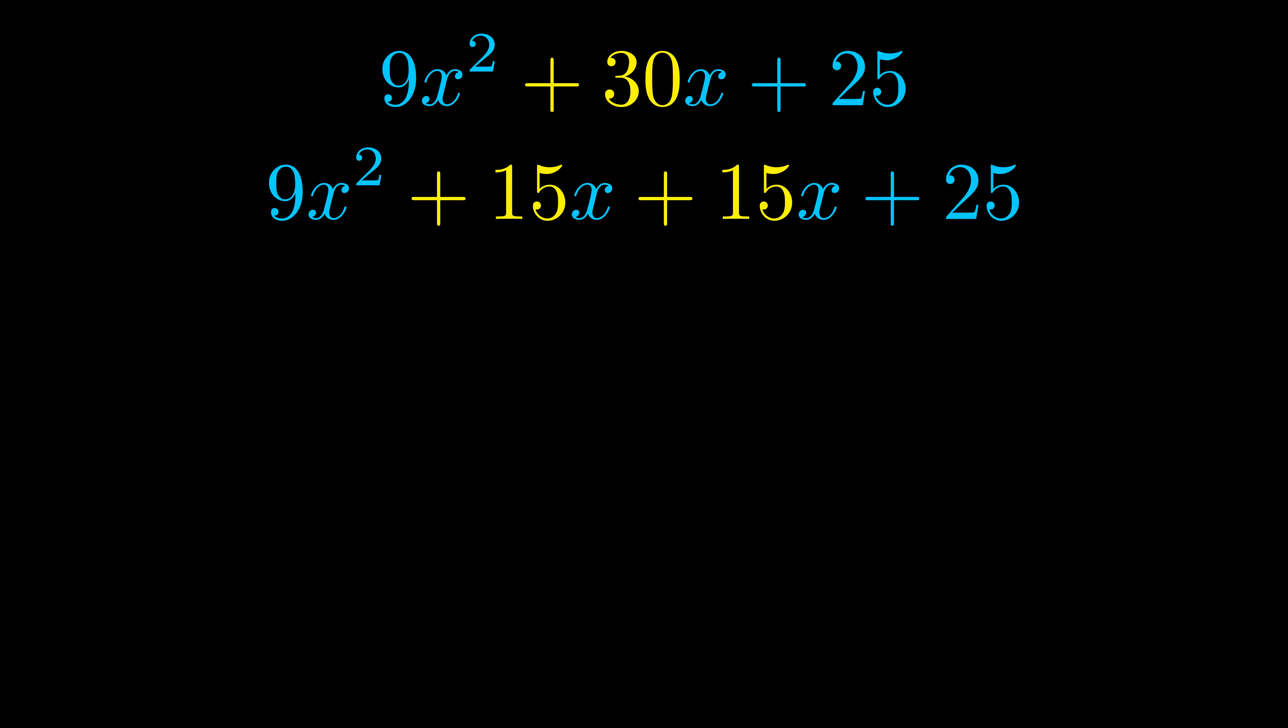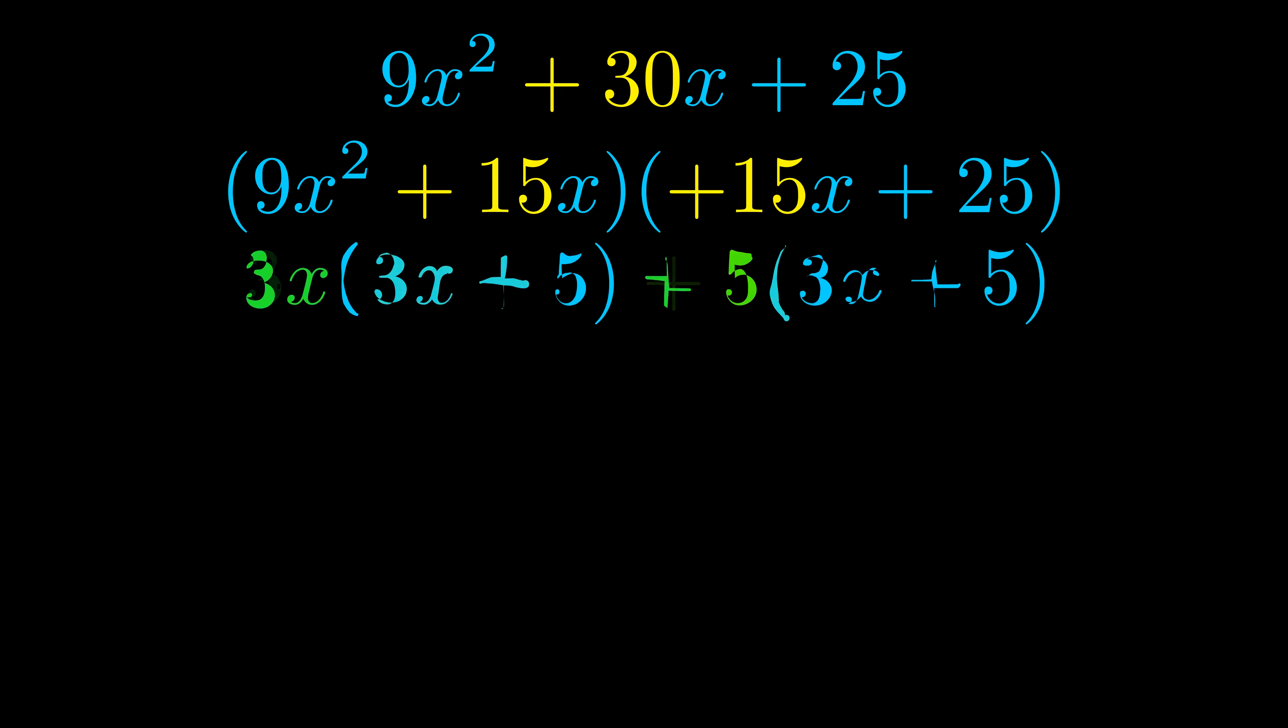Once we've done this we go ahead and we put parentheses around the first term and the last term. And we do that so that we can take the greatest common factor out of both terms. We can see the greatest common factor is now outside in green. Notice also how what remains inside of the parentheses is the same in both cases. The blue values are the same.